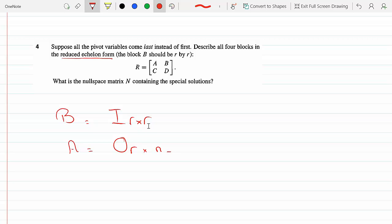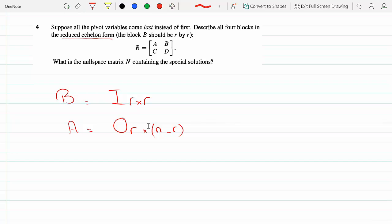N minus R columns, because matrix B has R columns and the entire size of the matrix is N. So the difference will be A. And which also leads that matrix C as well will have to be a zero matrix, because there's no pivots there. They said they come last.